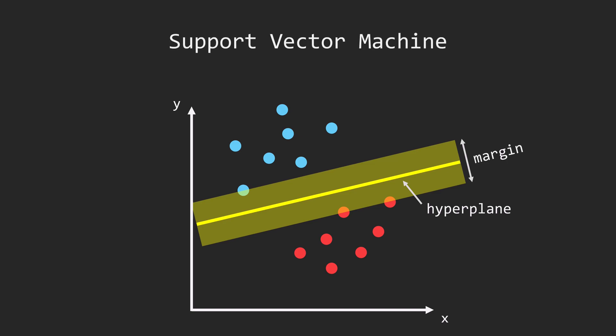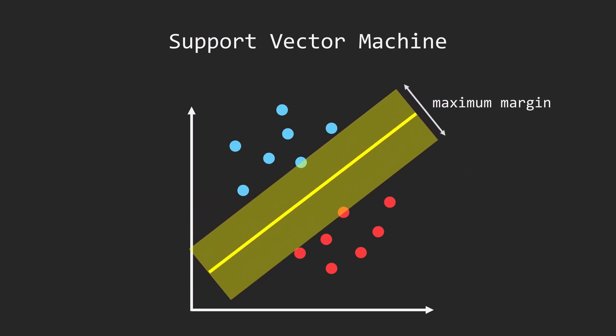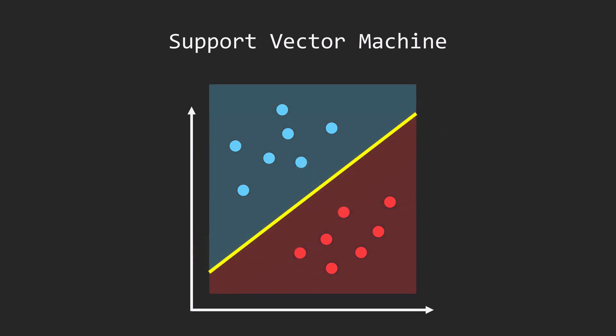What the support vector machine, the SVM, does is to find the largest possible margin between classes, positioning the hyperplane exactly in the middle. This optimal hyperplane divides our feature space clearly into two classes. Our first example is easy, as the classes are linearly separable.